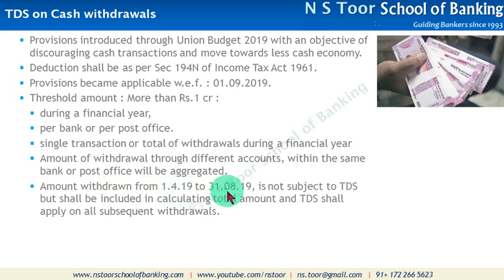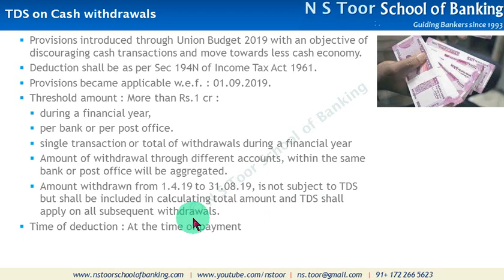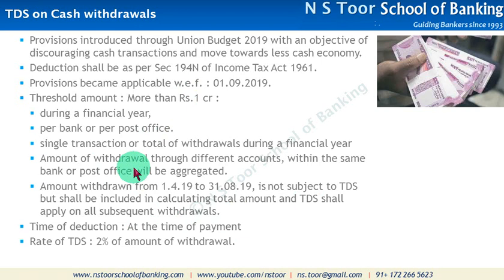Amount withdrawn from 1st April to 31st August 2019 is not subject to TDS - जो पैसा already इसके implementation होने से पहले withdraw हो चुका है cash, उसके उपर TDS नहीं करना. But for the remaining period, जब हम more than 1 crore का amount बनाएंगे तो उसके अंदर इस withdrawal के amount को भी add करना होगा, लेकिन TDS हम करेंगे केवल subsequent withdrawals के लिए. यह TDS की timing - deduction is applicable at the time of payment, so जब भी हम cash payment कर रहे होंगे and if that transaction falls within this threshold, then this deduction shall be done. Rate of TDS is 2% of the withdrawal amount.